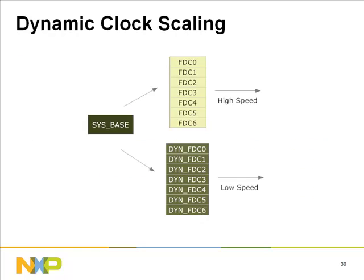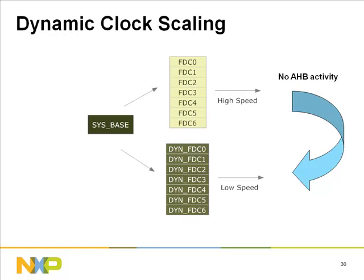Dynamic clock scaling: the SYS_base clock domain has seven dynamic fractional dividers as partner registers for FTC 0 to FTC 6. These registers need slower clock settings compared to the fractional divider registers. When enabled, the LPC 313X automatically switches to slow clocks when there is no AHB bus activity.